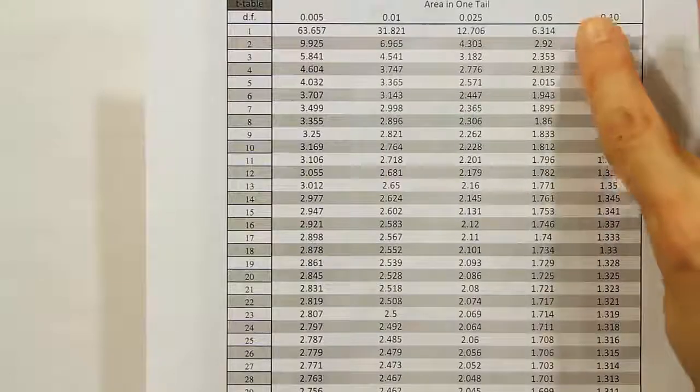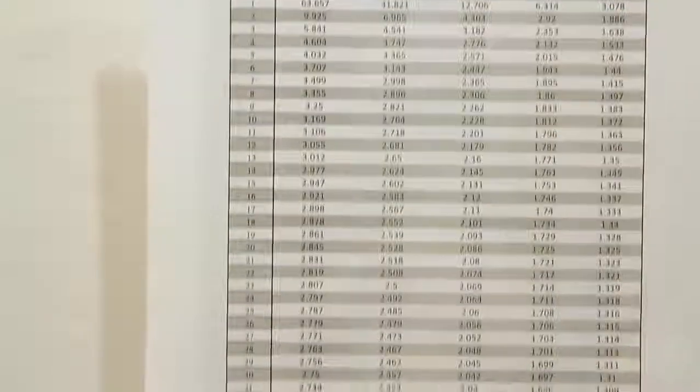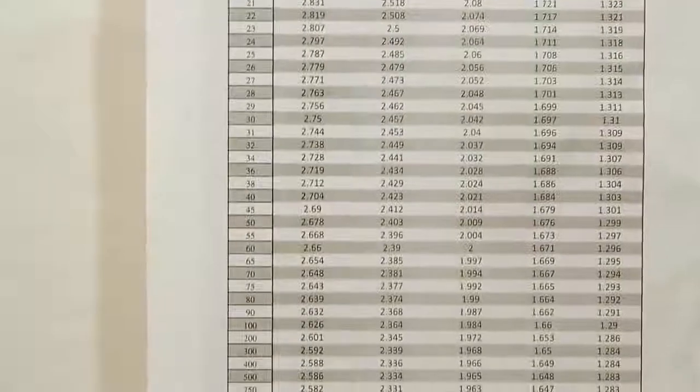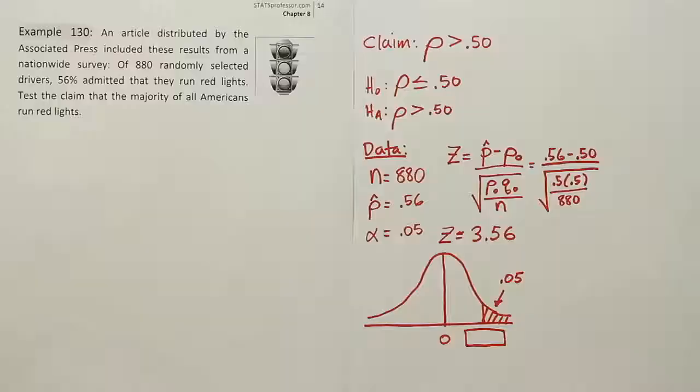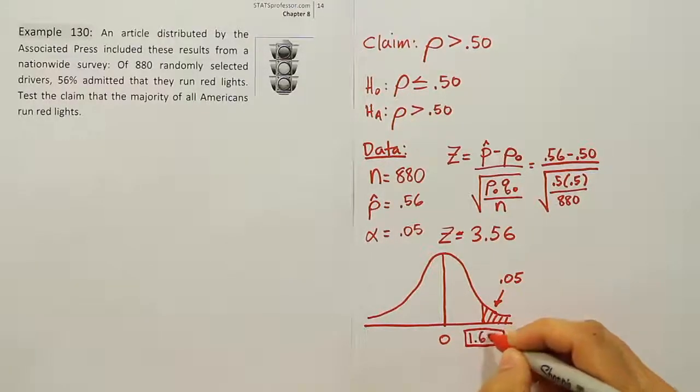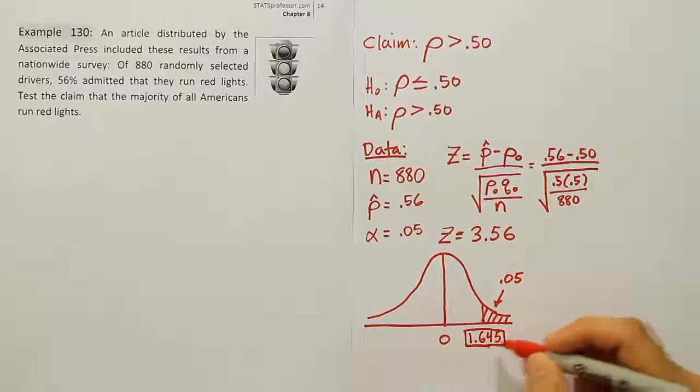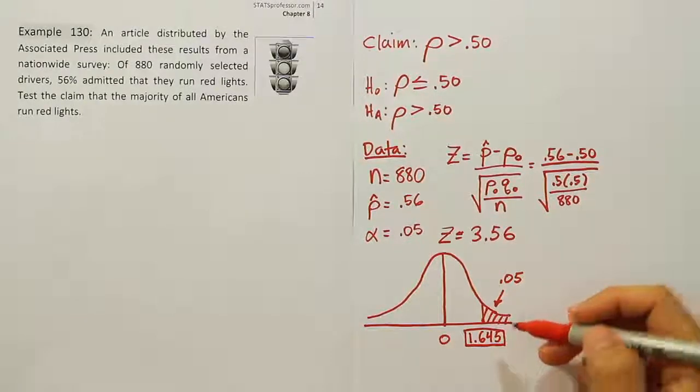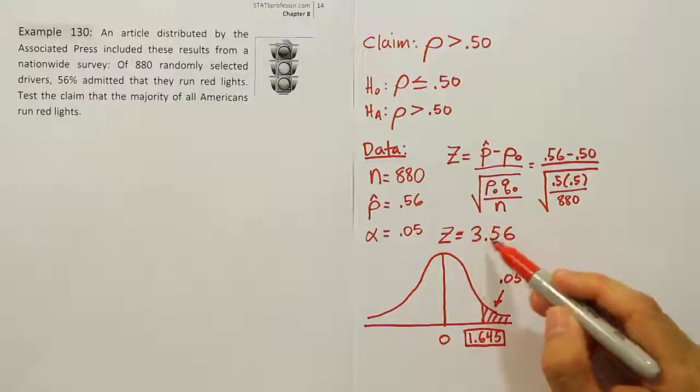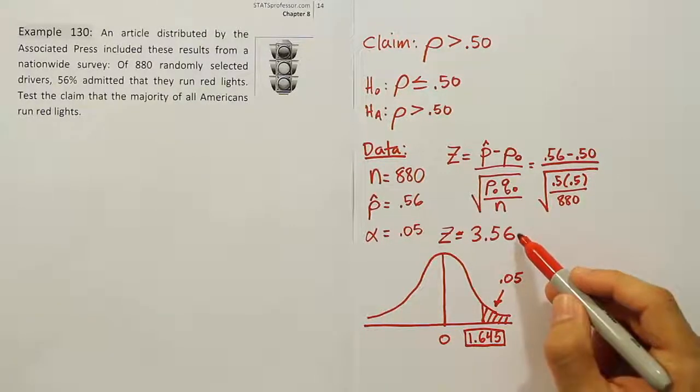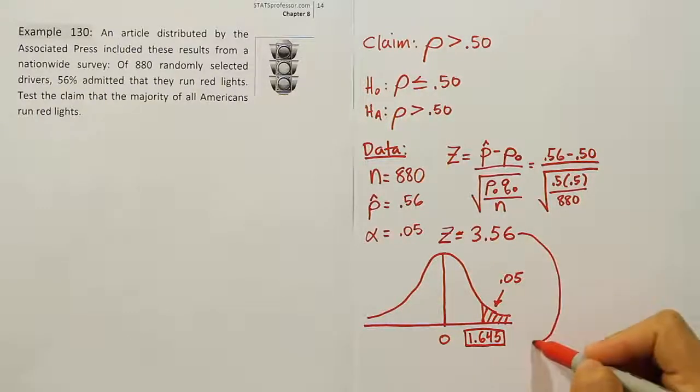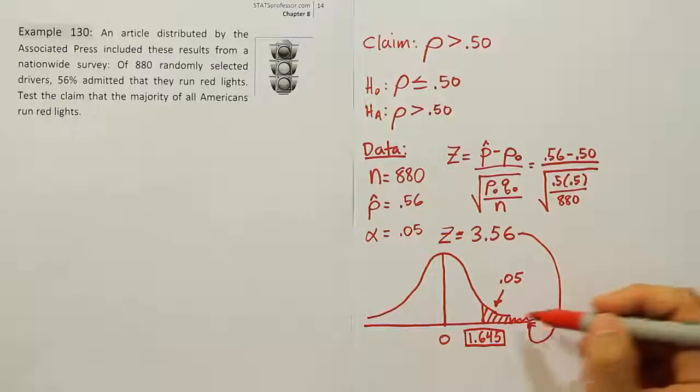We're looking at 0.05 in one tail and the critical value is 1.645. Now compare that to our test statistic of 3.56. It's very large, and that value is certainly in the shaded tail where we reject the null hypothesis.